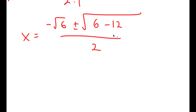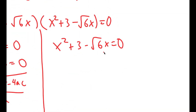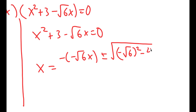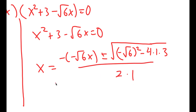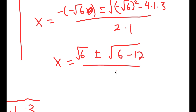This would not work because 6 minus 12 is negative 6, and you can't take the square root of a negative number. So there's no real solution to this equation. For x squared plus 3 minus the square root of 6x equals 0, I do the same thing and get the square root of 6 plus or minus the square root of 6 minus 12 again over 2, which gives the same result.